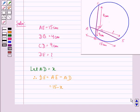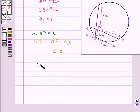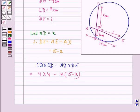Now we know that CD into BD is equal to AD into DE. This implies 9 into 4 is equal to X into 15 minus X. This implies 36 is equal to 15X minus X square.